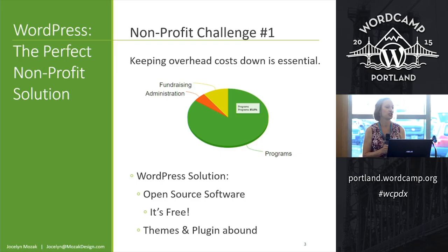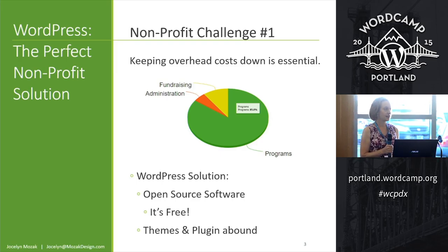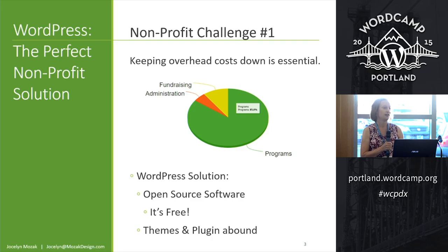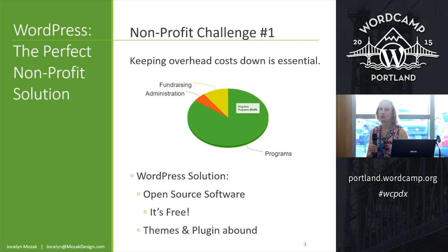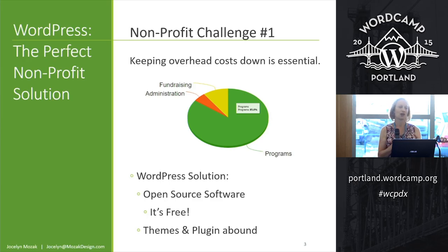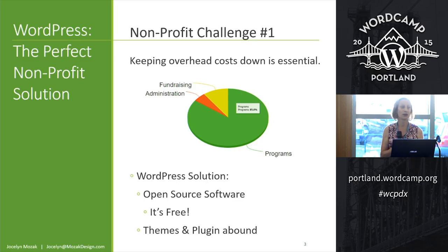Nonprofits have a couple of challenges. All businesses have the challenge of keeping costs down, but nonprofits especially so because they're measured against how much money goes to programs, and overhead shows up. So why is WordPress good? Well, it's free — you really can't get much better than that. There are also themes and plugins all over the place, giving you a great potential for starting points. You have the software, you can make it look good, add functionality, and grow with it.